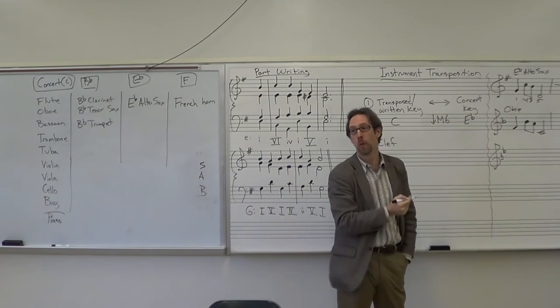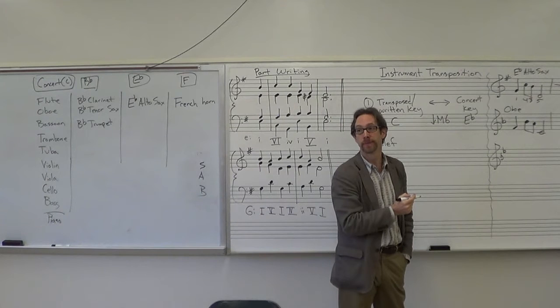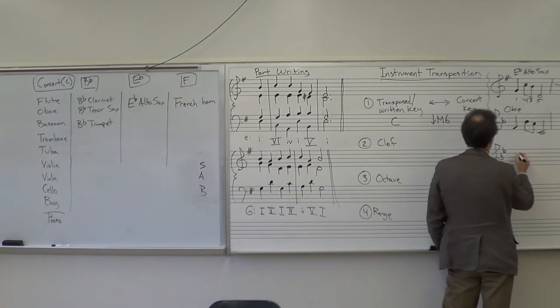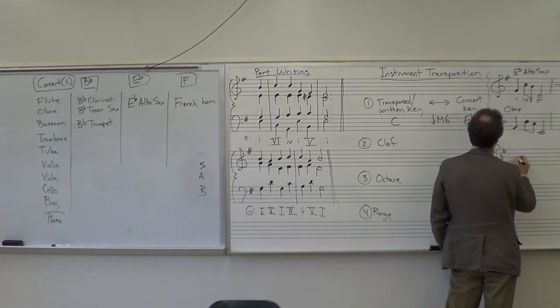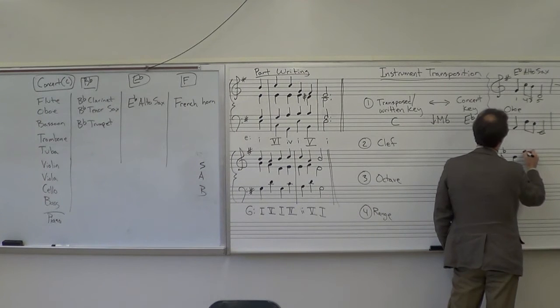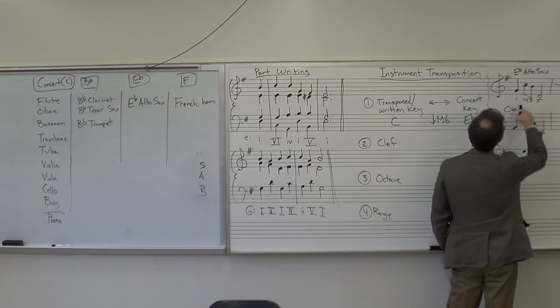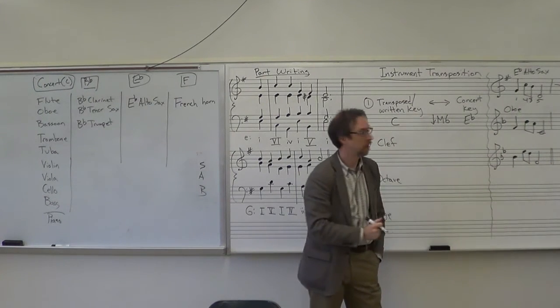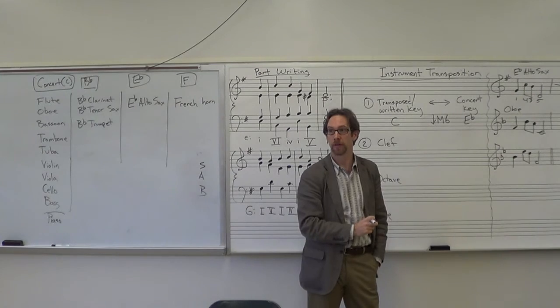So our key signature. We're going from G major down a major sixth. This is where all that stuff we've talked about before is really helpful. If we can do it quickly. The answer is B flat. So B flat major is our key. And we just do one, four, three, five. And that's how it would be written for an alto saxophone.